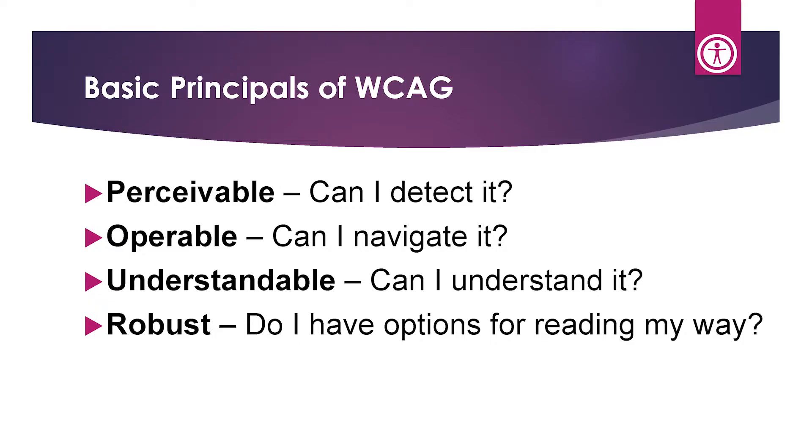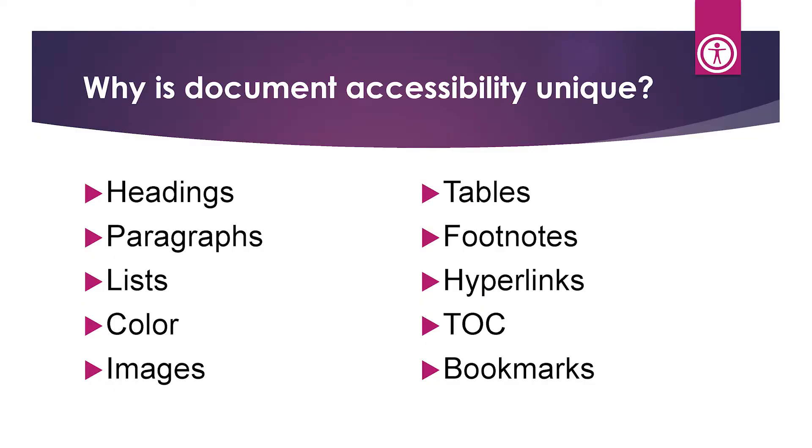The fourth principle, Robust, asks: do I have the option to read the document my way? A story might be read beginning to end, but you've probably never read a magazine or technical manual that way — you thumb through it, look at headings, pictures, and links. People using assistive technology have that same need. They want to navigate the document in a way that suits them, whether via bookmarks, a table of contents, or list-based navigation in their assistive technology.